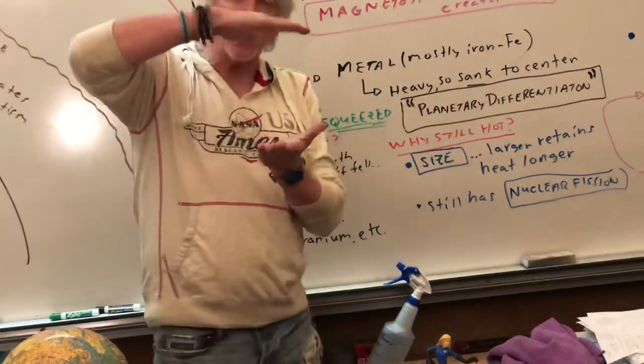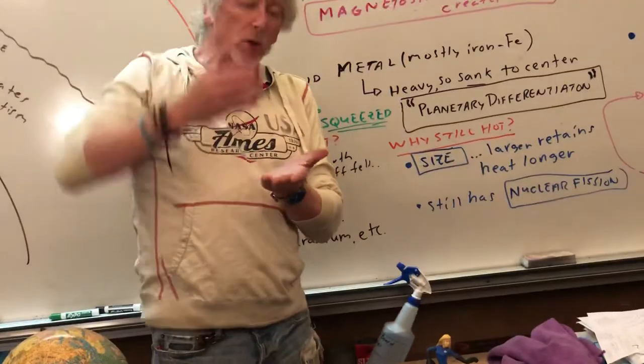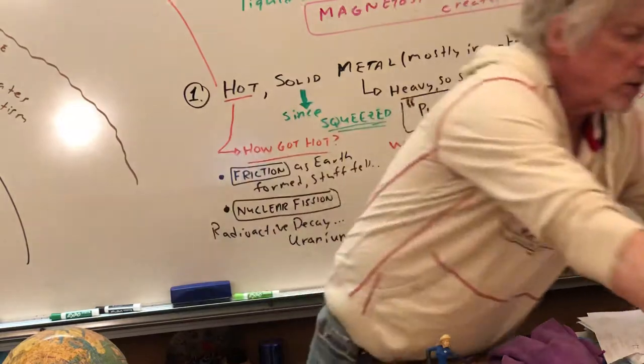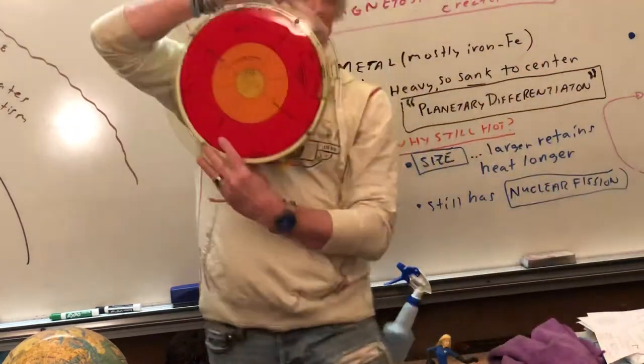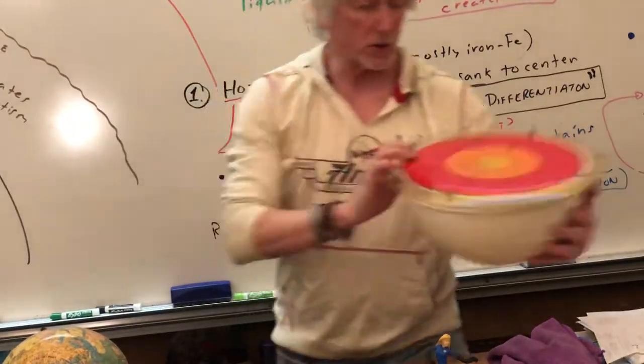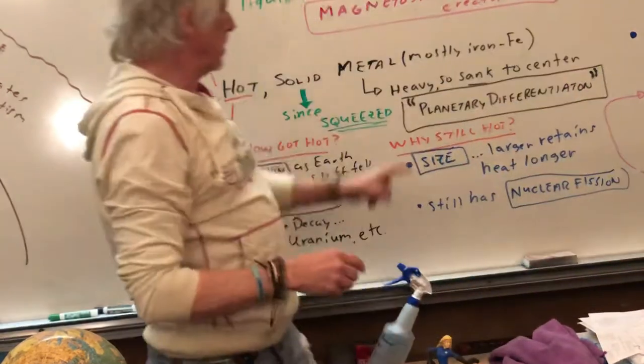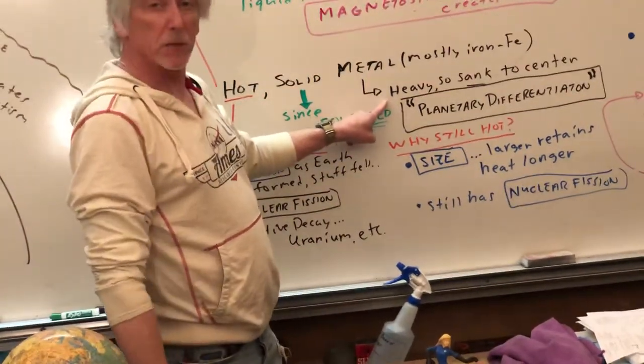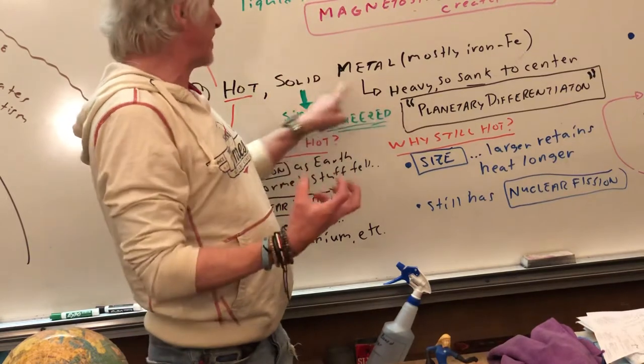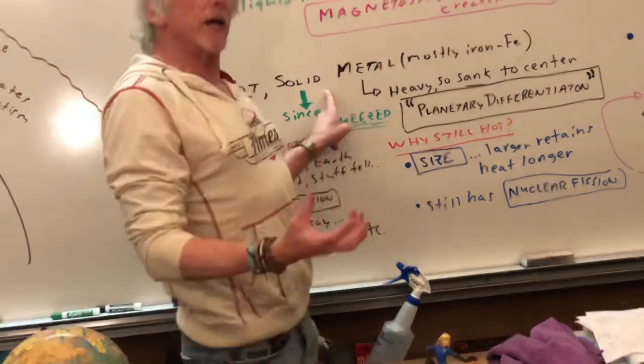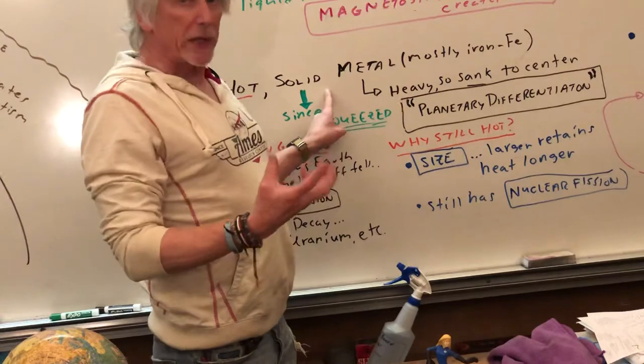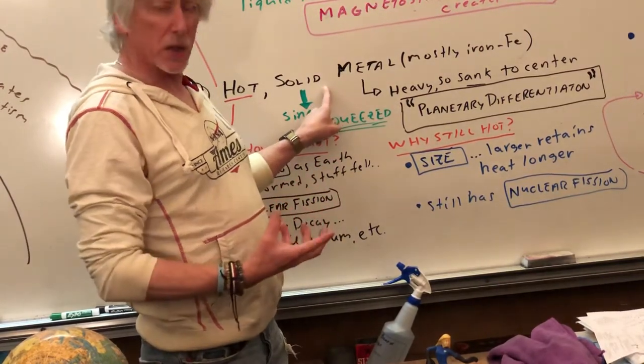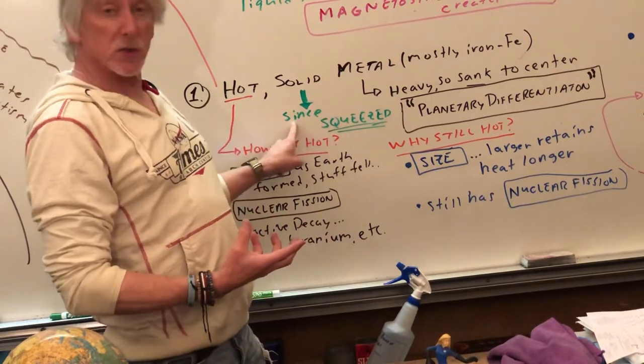That's called planetary differentiation. Meaning different layers. It's like a layered cake. Or you pour water and you pour oil and you'll see it layer out. So we've got a layered pastry here called Earth. But know that we've got metal in the middle and it sank. Well, why is it solid? I mean, it's really hot.